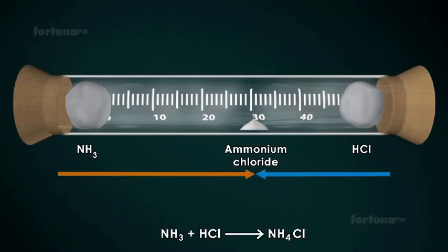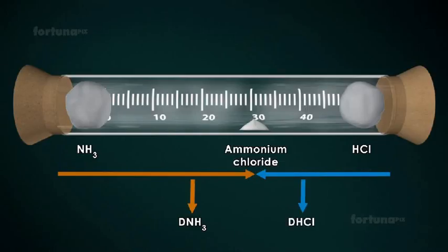Mark the point where the gases meet and form Ammonium Chloride. Measure the distance D NH3 from the Ammonia end and D HCl from the Hydrogen Chloride end. Ammonia gas will travel a longer distance, 30cm.